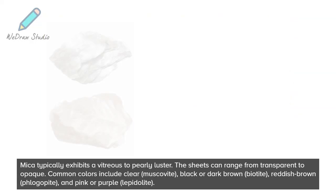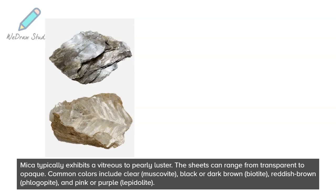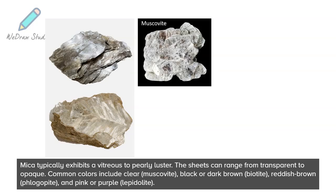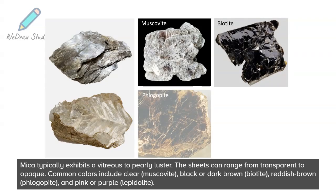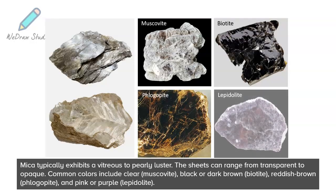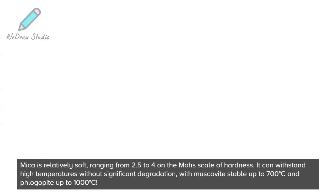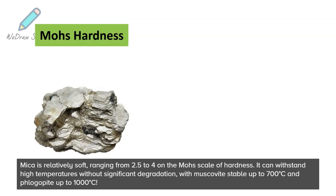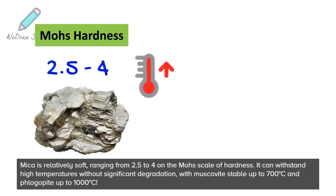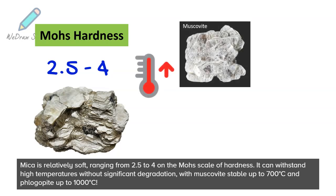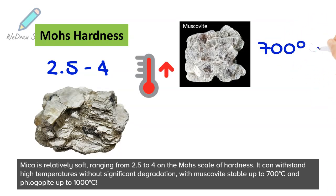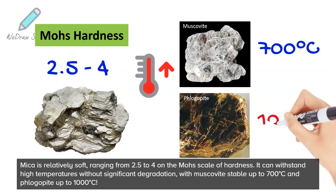Mica typically exhibits a vitreous to pearly luster. The sheets can range from transparent to opaque. Common colors include clear (muscovite), black or dark brown (biotite), reddish brown (phlogopite), and pink or purple (lepidolite). Mica is relatively soft, ranging from 2.5 to 4 on the Mohs scale of hardness. It can withstand high temperatures without significant degradation, with muscovite stable up to 700 degrees Celsius and phlogopite up to 1000 degrees Celsius.